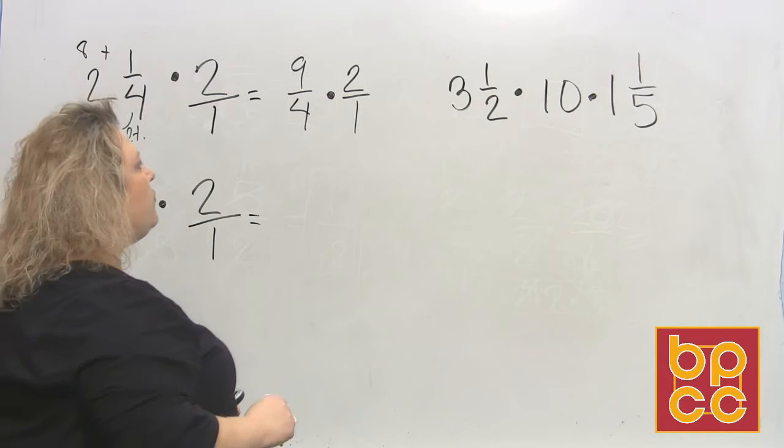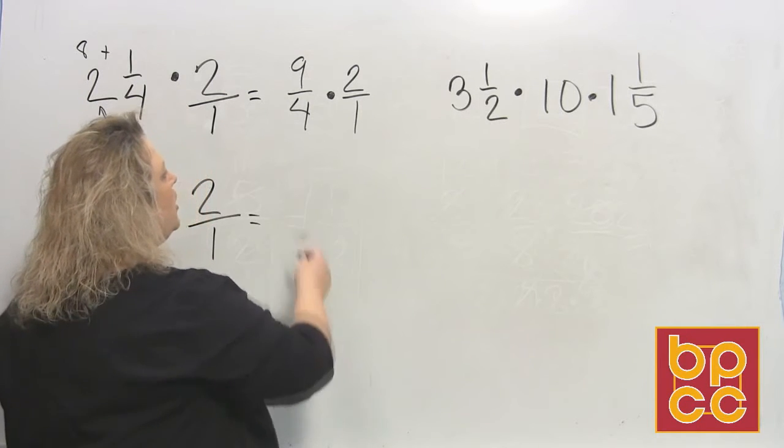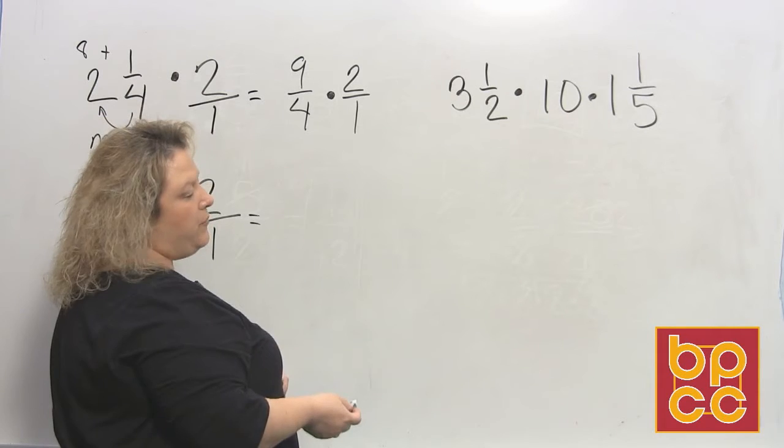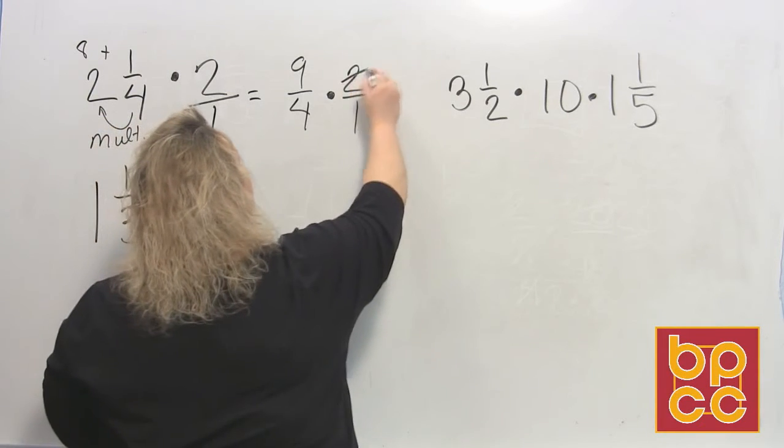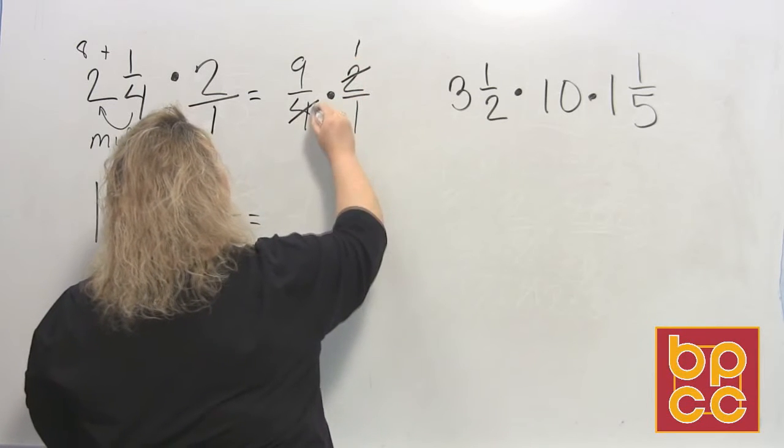Once you get it to this way, this is just like what we did in the previous module. Look and see if there's any way that you can reduce this, and I can. I can reduce the 2 and the 4. 2 divides into 2 once, 2 divides into 4 twice.